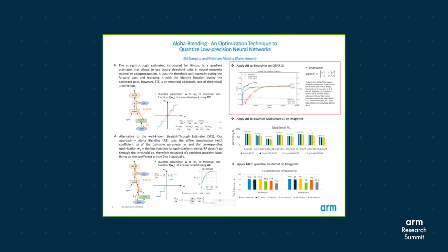We apply alpha blending method to quantize some neural networks. First for a binary network reported previously, illustrated by the diagram. The green curves are the accuracy converges using standard STE method, while the red curve is our alpha blending method, which is slightly better than STE.